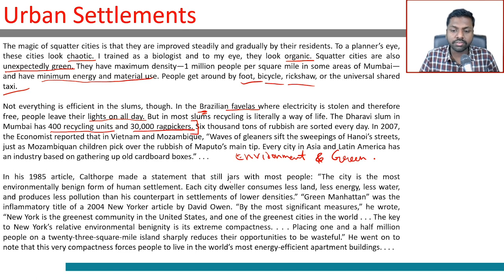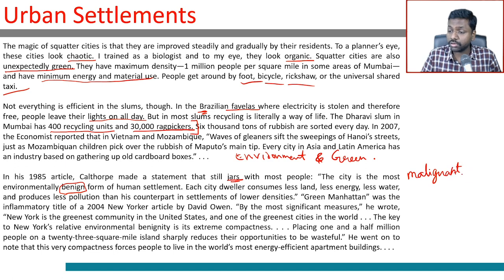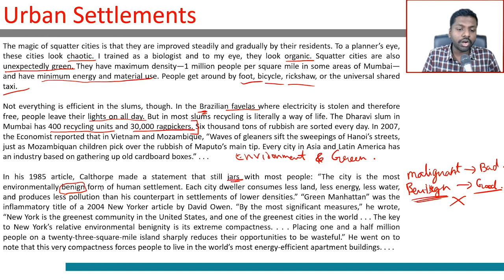In his 1985 article, Karl Thorpe made a statement that still jars with most people. 'Jars' means it feels unnatural or unpleasant. He said the city is the most environmentally benign form of human settlement. Benign — like a benign tumor — means it is not harmful. So environmentally benign means it is a good form of human settlement, not a damaging one.